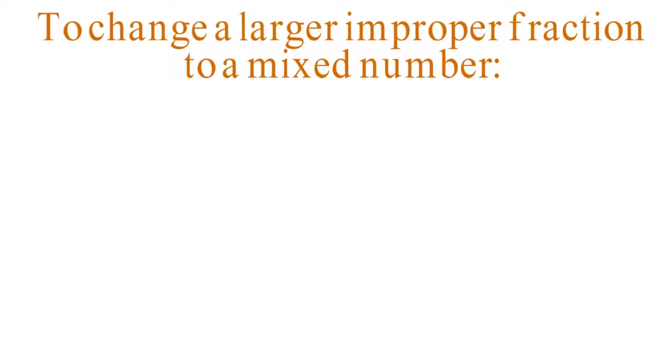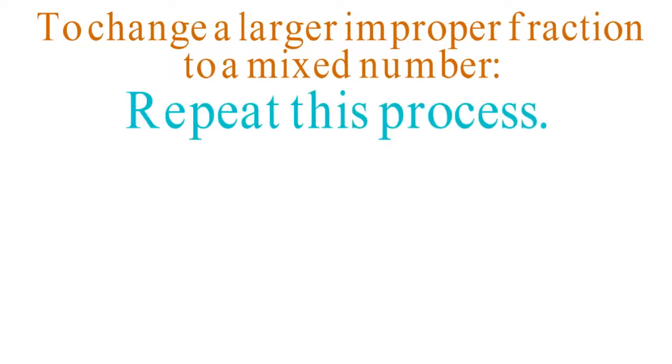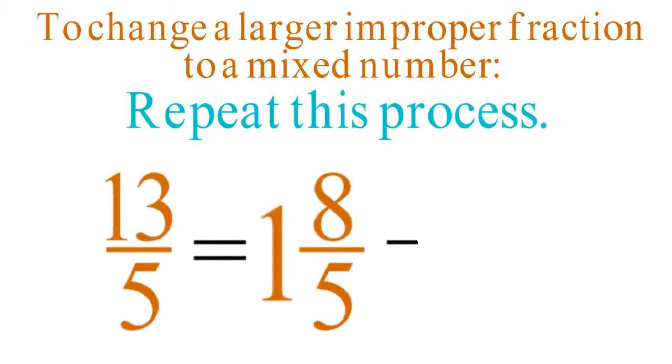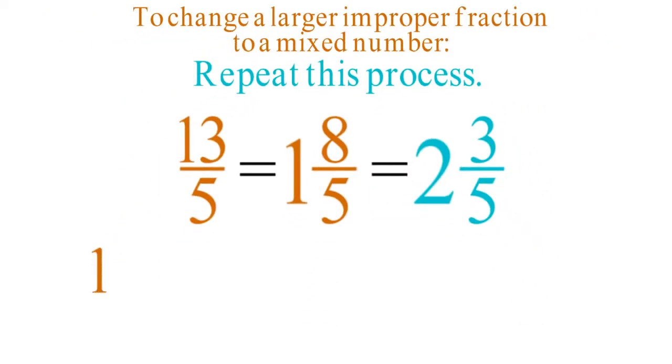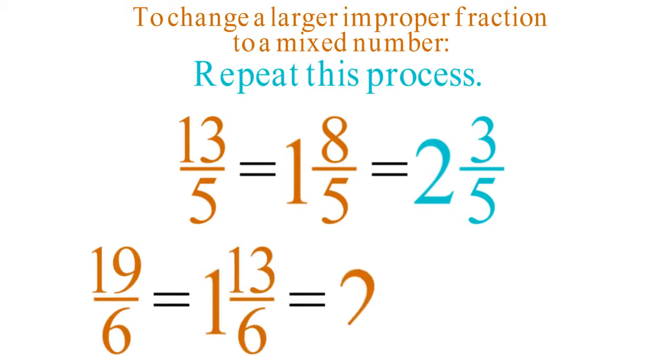To change a larger improper fraction to a mixed number, you can repeat this process. For example, 13 fifths equals 1 and 8 fifths, which equals 2 and 3 fifths. Similarly, 19 sixths equals 1 and 13 sixths, which equals 2 and 7 sixths, and this equals 3 and 1 sixth.